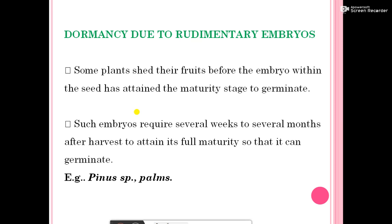Next, dormancy due to rudimentary embryos. Some plants shed their fruits before the embryo within the seed has attained the maturity stage to germinate. Such seeds require several months or weeks after harvest to attain full natural maturity so that they can germinate. For example, Pinus species and palms.